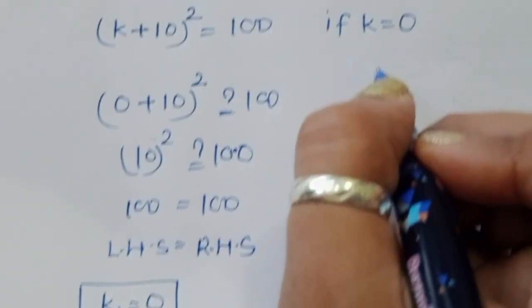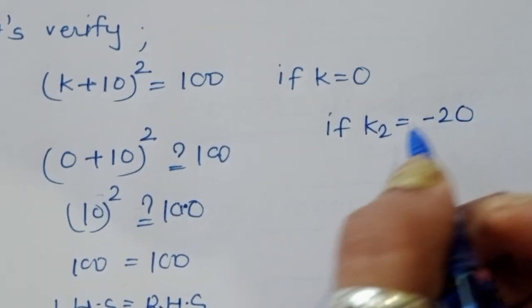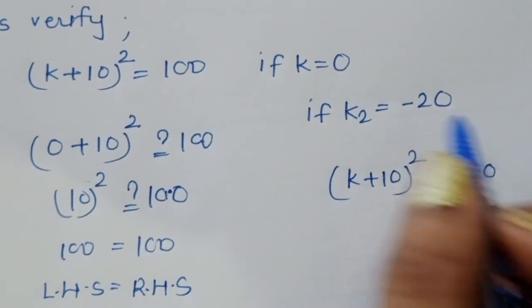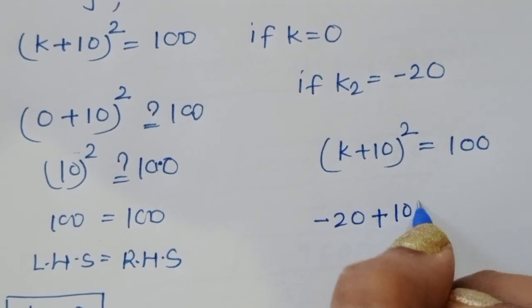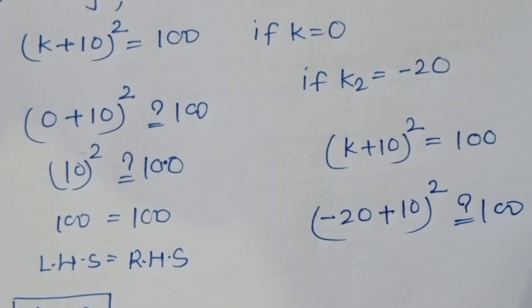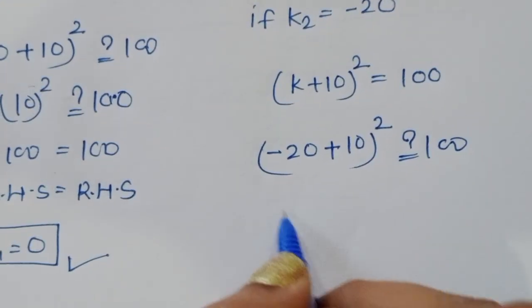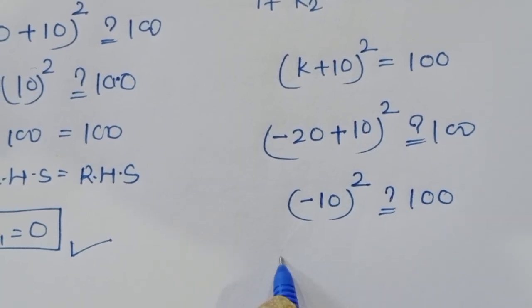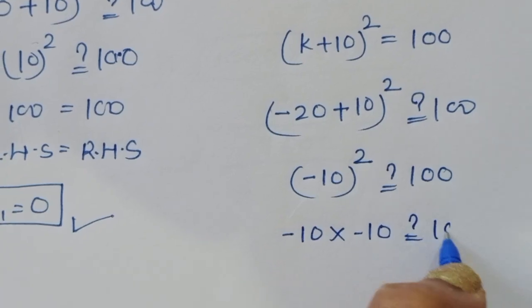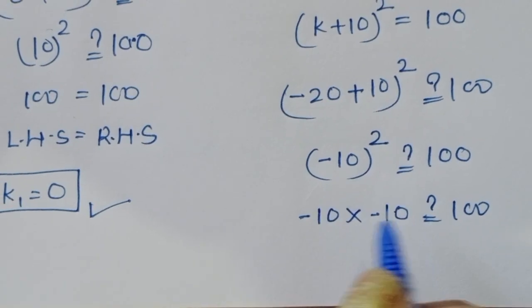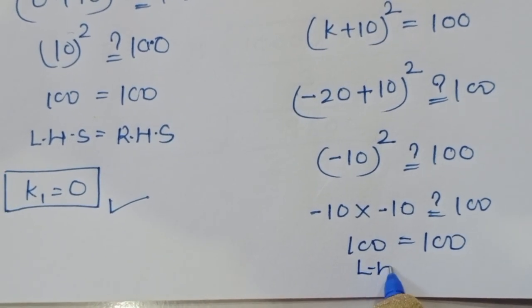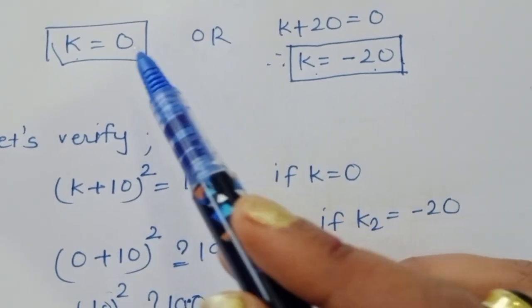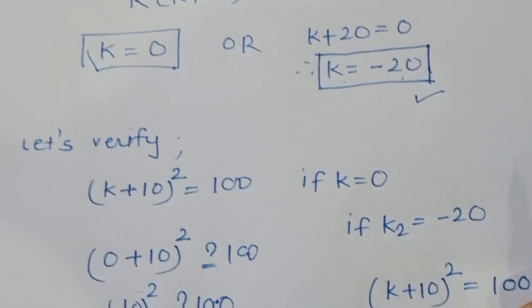Now verifying k₂ = -20: (-20 + 10)² = (-10)² = (-10) × (-10) = 100. LHS equals RHS, so k₂ = -20 is also a correct solution. Therefore k₁ = 0 and k₂ = -20 are the correct solutions for this equation. Thank you.